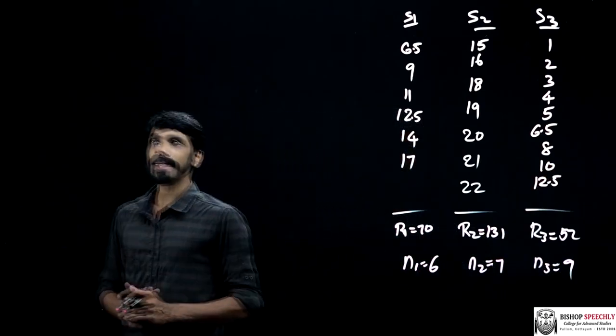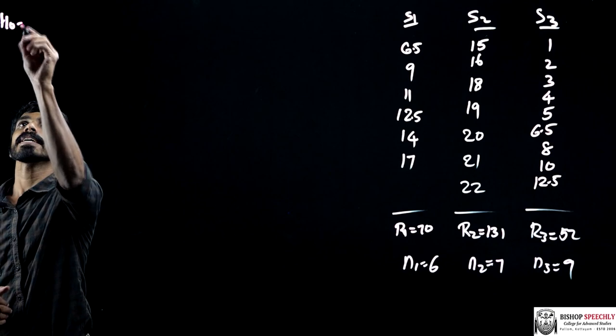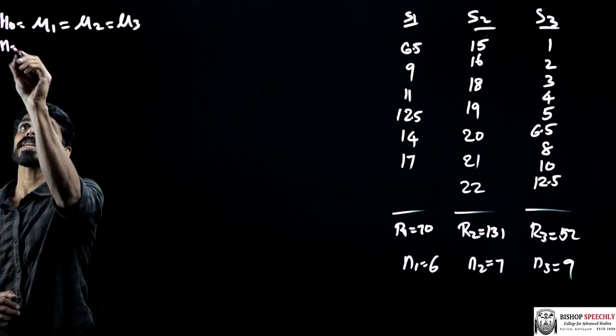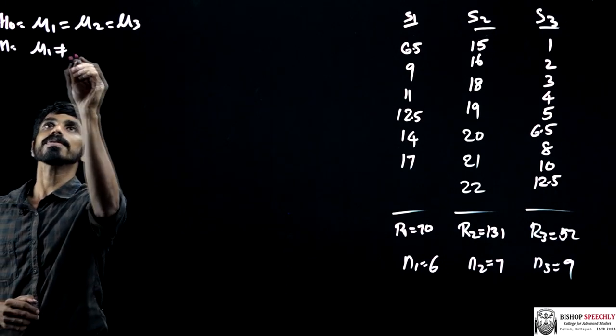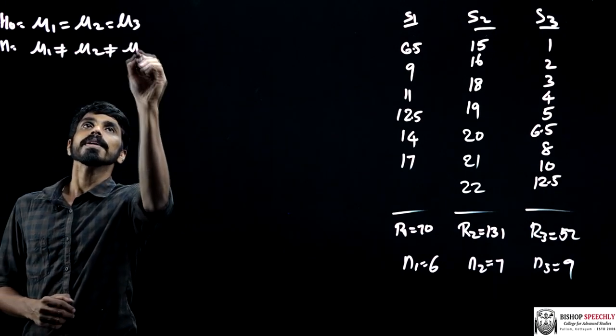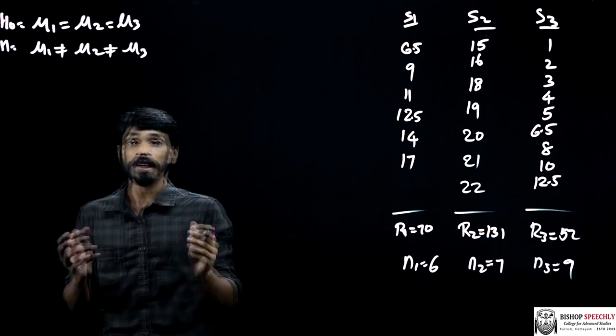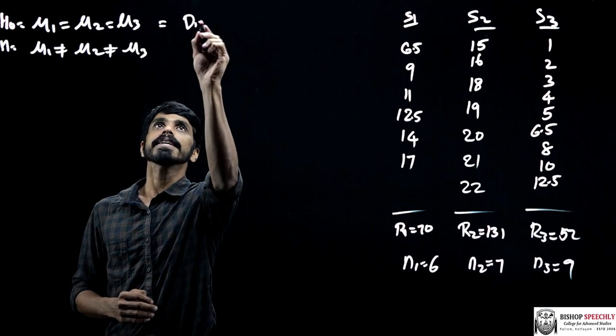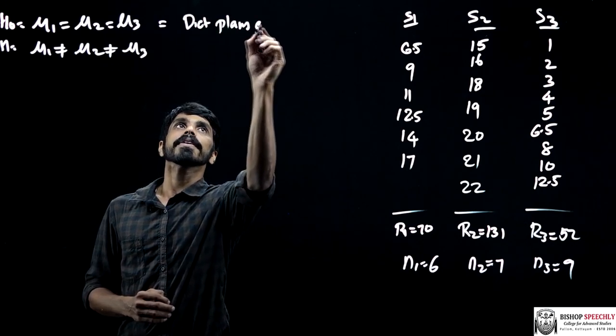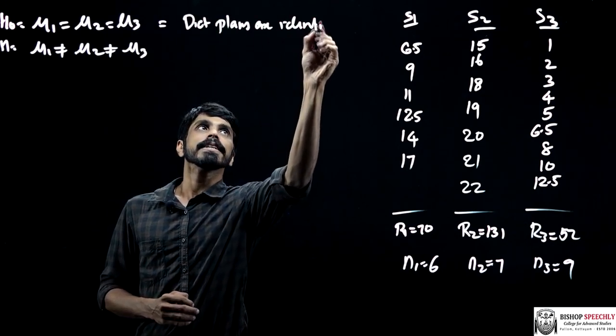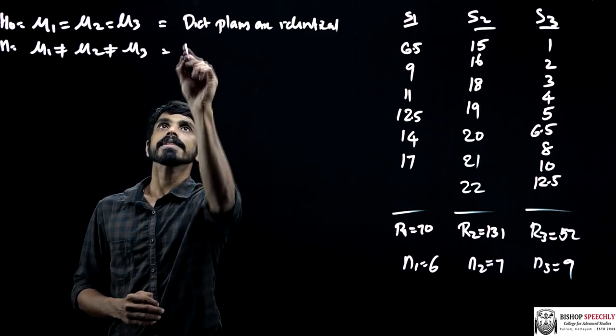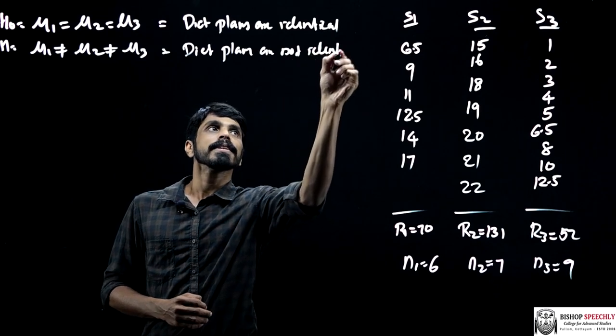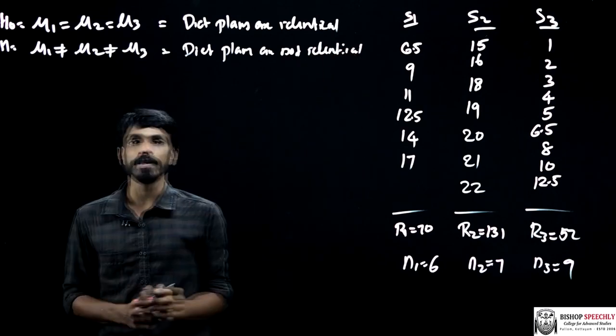The null hypothesis of Kruskal-Wallis test is that μ1 equals μ2 equals μ3. The alternative hypothesis will be μ1 not equal to μ2 not equal to μ3. In this case, they have asked whether the diet plans are identical or not. So our null hypothesis is that diet plans are identical, and the alternative hypothesis is diet plans are not identical.